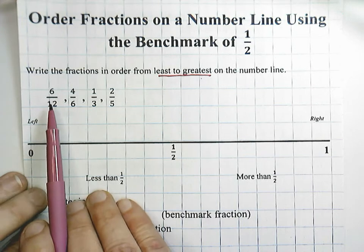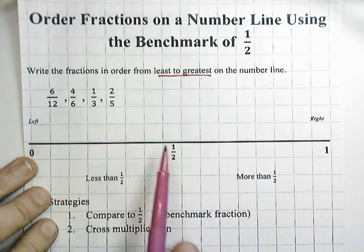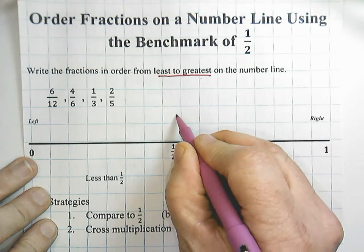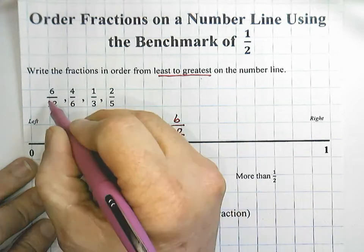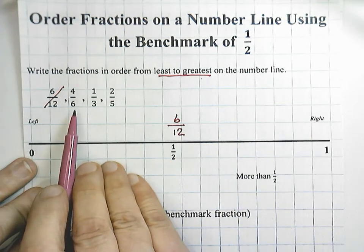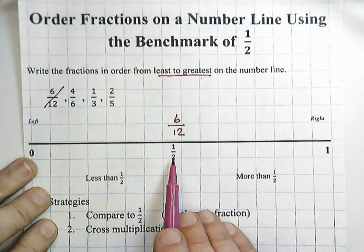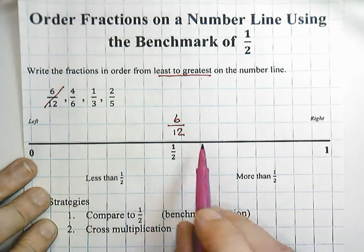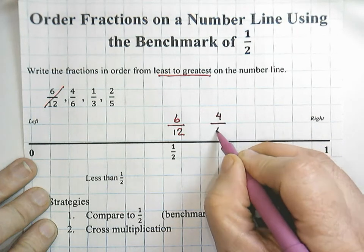Six-twelfths is a fraction that is equivalent to one-half, so that would be placed right here. Four-sixths — I know that three-sixths would be equivalent to one-half, so four-sixths would be greater. Put that approximately here.